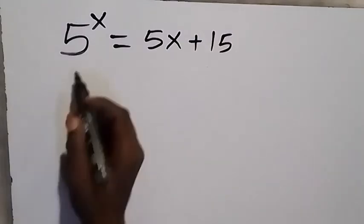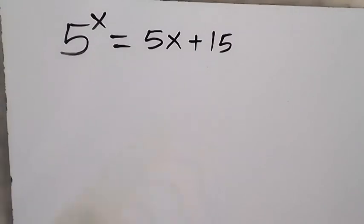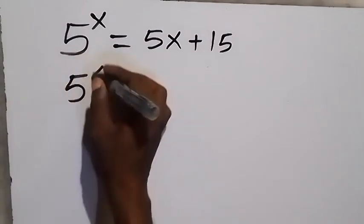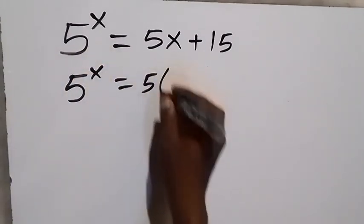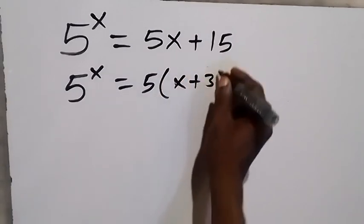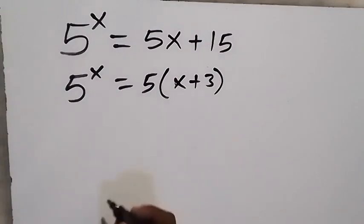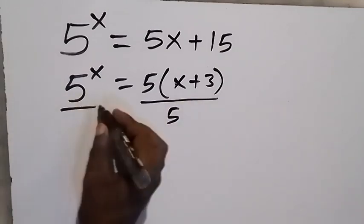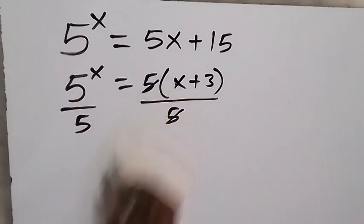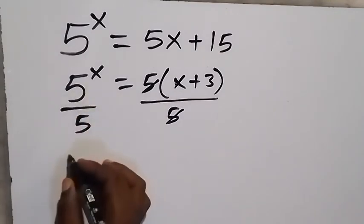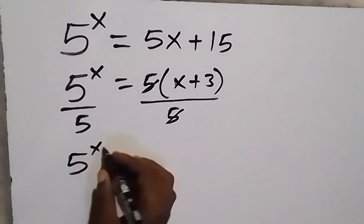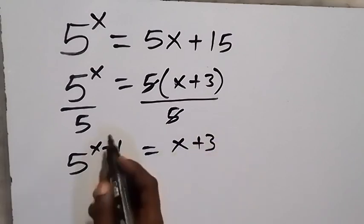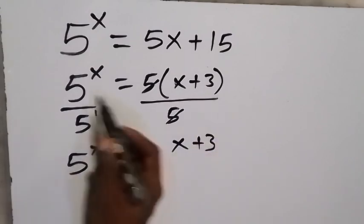Hello! How to solve this problem: 5 raised to power x equals to 5x plus 15 on the right hand side. Let's factor 5 out — we have 5 raised to power x equals to 5 times bracket x plus 3. When we take 5 out, this is what we have left. Then let's divide both sides by 5. Here 5 cancels 5, and on this side we can write it as 5 raised to power x minus 1 equals to x plus 3, because on this side we have 5 raised to power 1, and from the law of indices, when same base terms divide we subtract the powers.